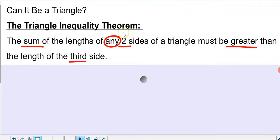The Triangle Inequality Theorem, or determining if three sides can be a triangle. The rule for this is that the sum of the lengths of any two sides of a triangle must be greater than the length of the third side.